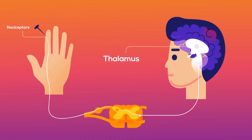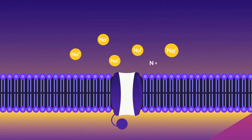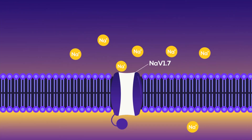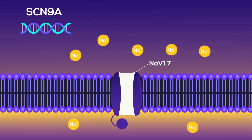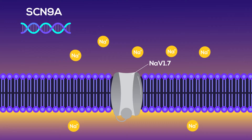The thalamus creates the experience of pain, but it cannot localize the area of pain. Therefore, it sends signals to the somatosensory cortex of the brain to help us know where the pain is coming from. A rare mutation in the gene called SCN9A results in abnormal Nav 1.7 sodium channels in the nociceptors.